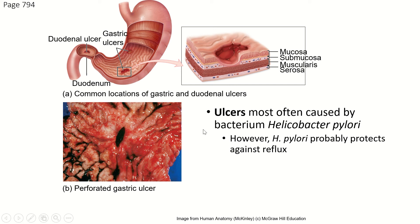Ulcers actually aren't caused just by stomach acid. They're caused by a bacterium called Helicobacter pylori — pylori because it was discovered in the pylorus of the stomach, and helico meaning it's a helical-shaped bacterium. Ulcers are sites where this bacterium has become too numerous and has actually started to create an infection and attack tissue.